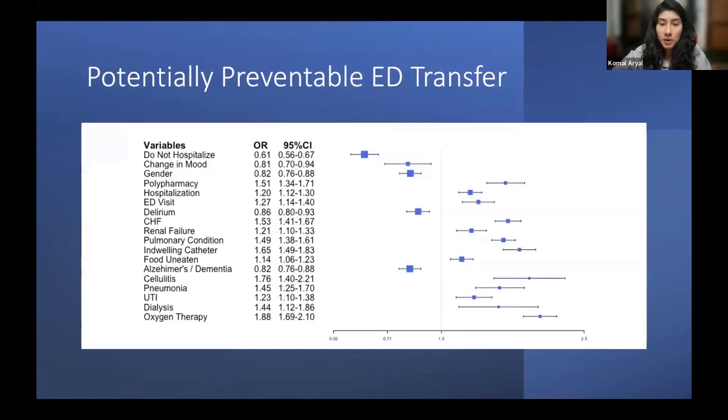I then created a Cox model for both PPED and non-PPED. After adjustment, 14 out of 18 resident characteristics or variables in the model were associated in the same direction with a PPED and a non-PPED, indicating that both models were very similar.